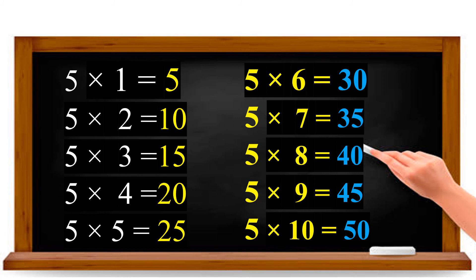Say along with me. 5 ones are 5. 5 twos are 10. 5 threes are 15. 5 fours are 20. 5 fives are 25. 5 sixes are 30. 5 sevens are 35. 5 eights are 40. 5 nines are 45. 5 tens are 50. Yes, clear!